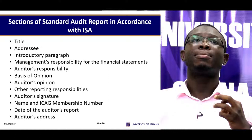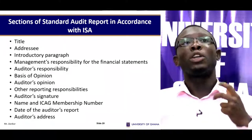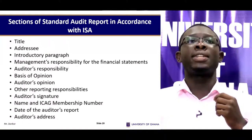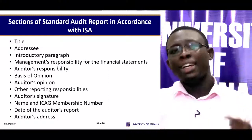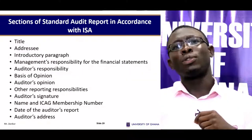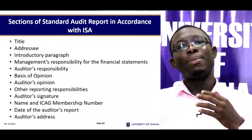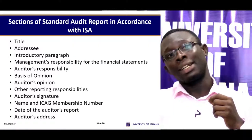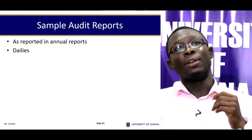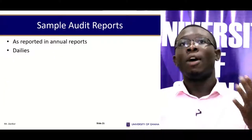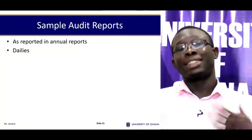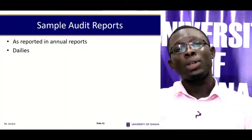A standard audit report has the following sections: title; addressee; introductory paragraph; management's responsibility for the financial statements; auditor's responsibility; basis of opinion; auditor's opinion; other reporting responsibilities; auditor's signature; name and Institute of Chartered Accountants Ghana membership number; date of the auditor's report; and auditor's address. You can consult various company annual reports to see how audit reports are written as samples, so you can always identify the various sections of a standard audit report.